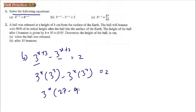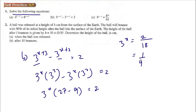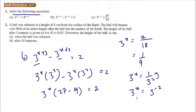3^3 is 27 and 3^2 is 9, so 3^x times (27 minus 9) equals 2. That gives 3^x times 18 equals 2, so 3^x equals 2 over 18, which is 1/9. Since 1/9 equals 3^(-2), we have x is equal to negative 2.